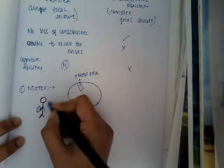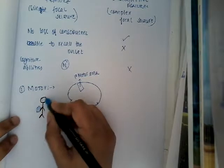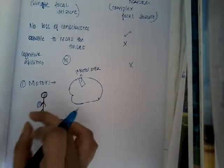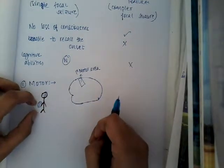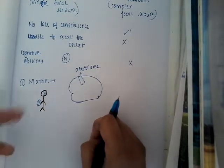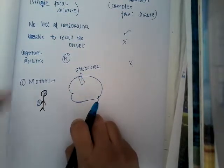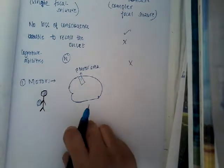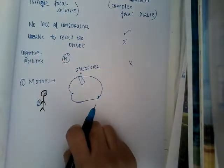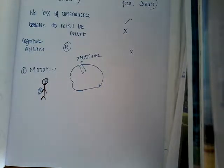If it involves the face area in the motor homunculus, then there will be involuntary movements of the face. Generally, it includes only one part of the body — at least a hand, or a face, or fingers, or legs — one segment of the body is involved. The electrical activity is mainly from the primary motor area. There are three main named types of focal motor seizures we need to know. The first is Jacksonian march.